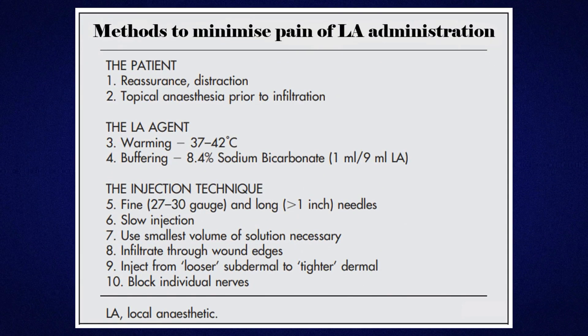Methods to minimize pain of local anesthetic administration include patient reassurance and distraction, and topical anesthesia prior to infiltration. Regarding the LA agent: warming to 37–42°C and buffering with 8.4% sodium bicarbonate at 1 ml per 9 ml LA. For injection technique: use fine 27–30 gauge, long (0.1 inch) needles; slow injection; use the smallest volume necessary; infiltrate through wound edges; inject from looser subdermal to tighter dermal layers; and block individual nerves.